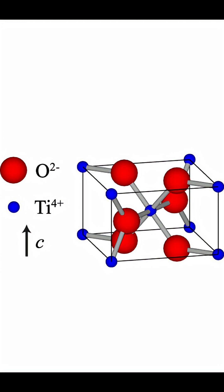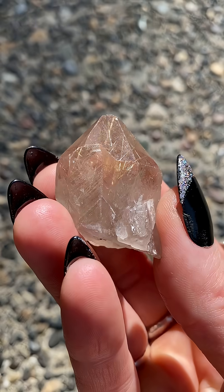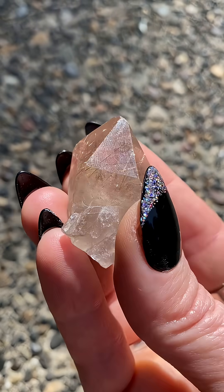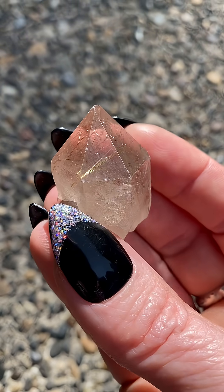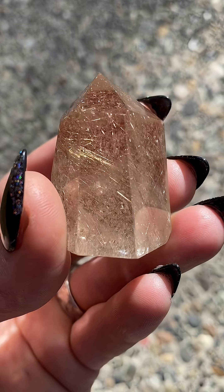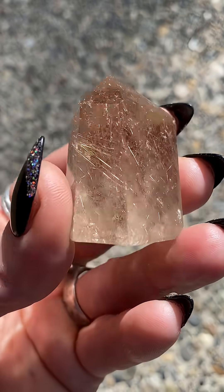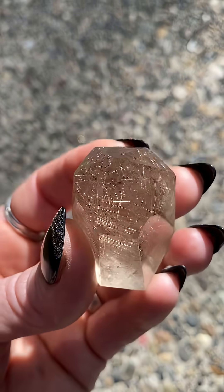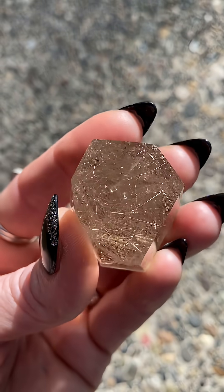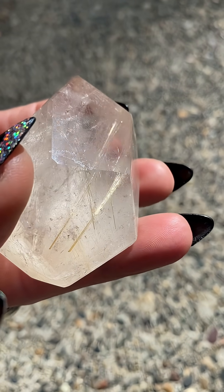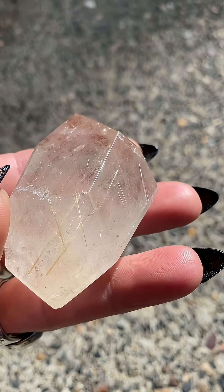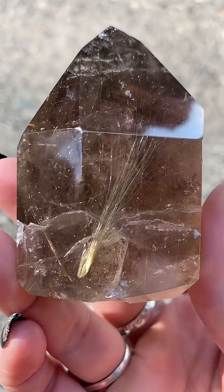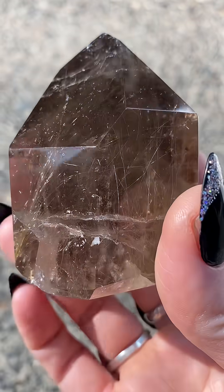The formation of rutilated quartz occurs when needle-like crystals of titanium dioxide are trapped within growing quartz crystals. These can be introduced through hydrothermal activities, where hot fluids carry minerals into cavities within the quartz crystals. Rutile needles can also form during the growth of quartz in the presence of titanium-rich mineral sources.